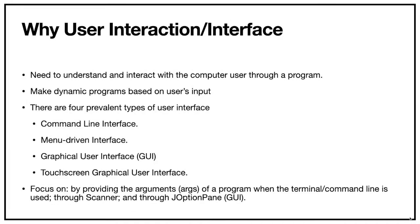Let's start by asking why we need user interaction, or user interface as many computer scientists call it. The whole idea is to interact with the computer user through a program. We want to make meaningful programs where the computer user can provide information — whether it's a primitive type, a string, or an object — and use it in context, perhaps for mathematical operations. The goal is to make a more dynamic program based on the user's input.